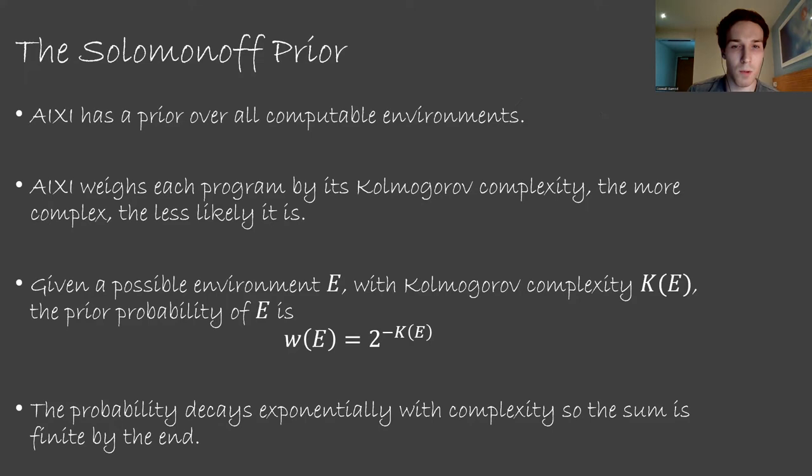The reason we use an exponentially weighted K here is so that the sum of all the prior distribution components will sum to some finite number, so we can normalize and use a genuine probability distribution. This allocates non-zero probability to every hypothesis, so there is a grain of truth in this prior. The agent should be able to figure out what environment it's actually in.